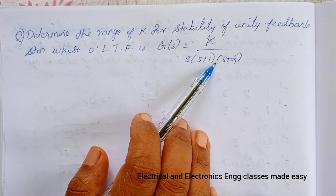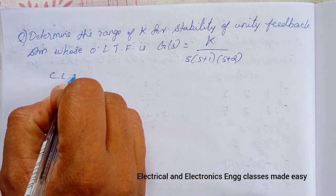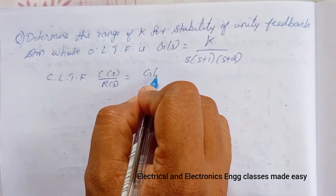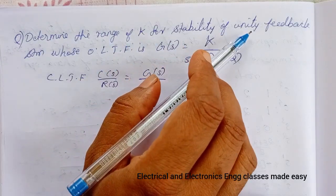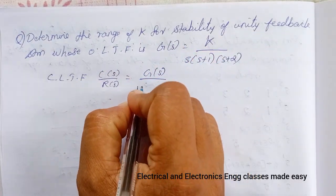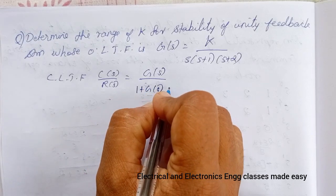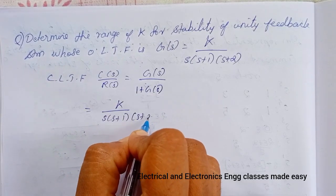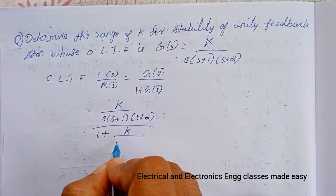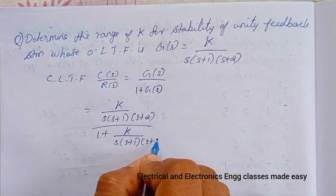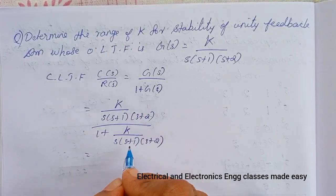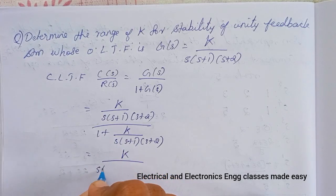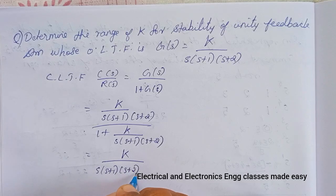To determine the characteristic equation, we find the closed loop transfer function: C(s)/R(s) = G(s) / [1 + G(s)H(s)]. Since it is a unity feedback system, H(s) = 1, so this equals K/[s(s+1)(s+2)] divided by 1 + K/[s(s+1)(s+2)]. Taking the LCM and simplifying, we get K / [s(s+1)(s+2) + K].